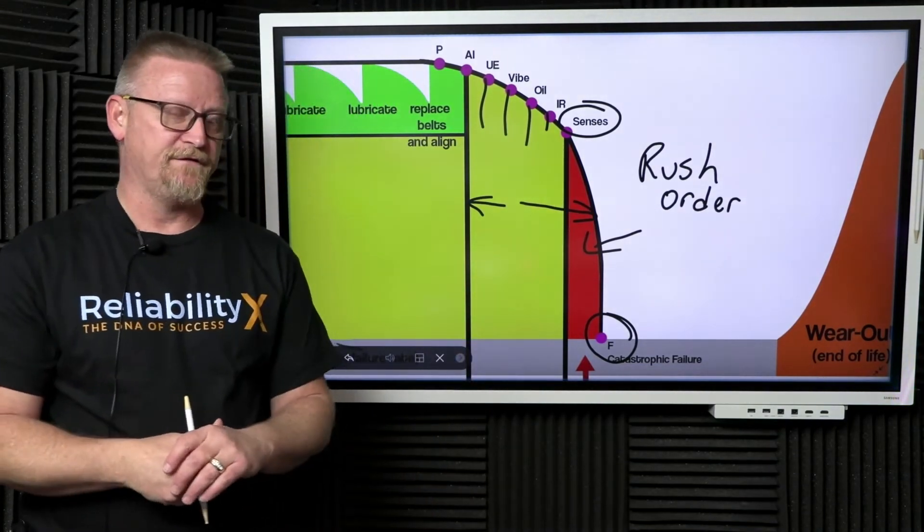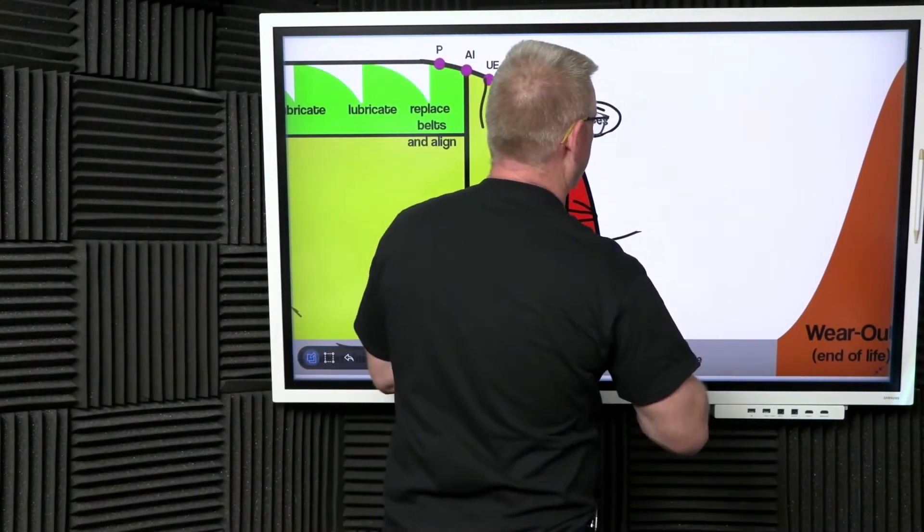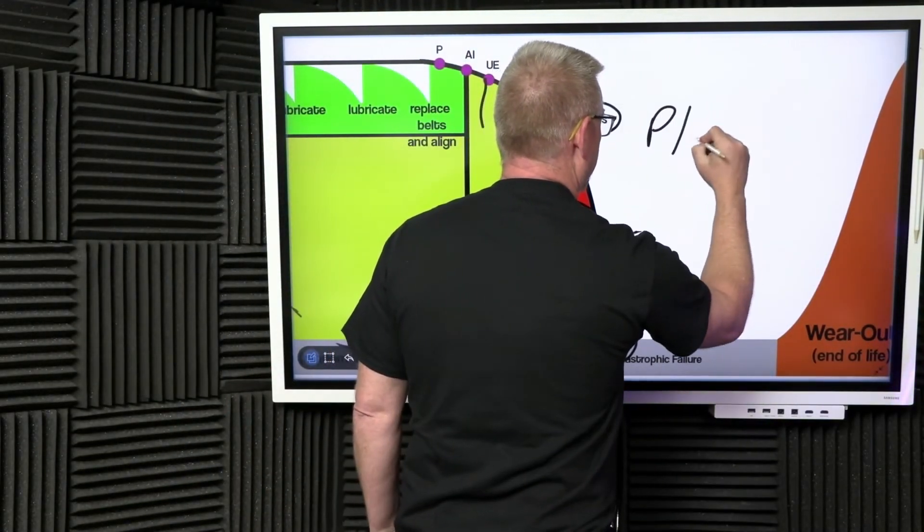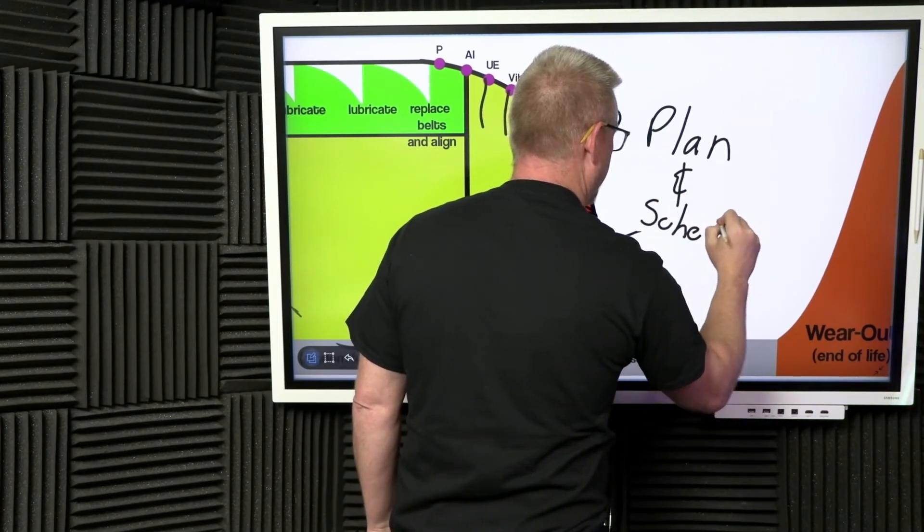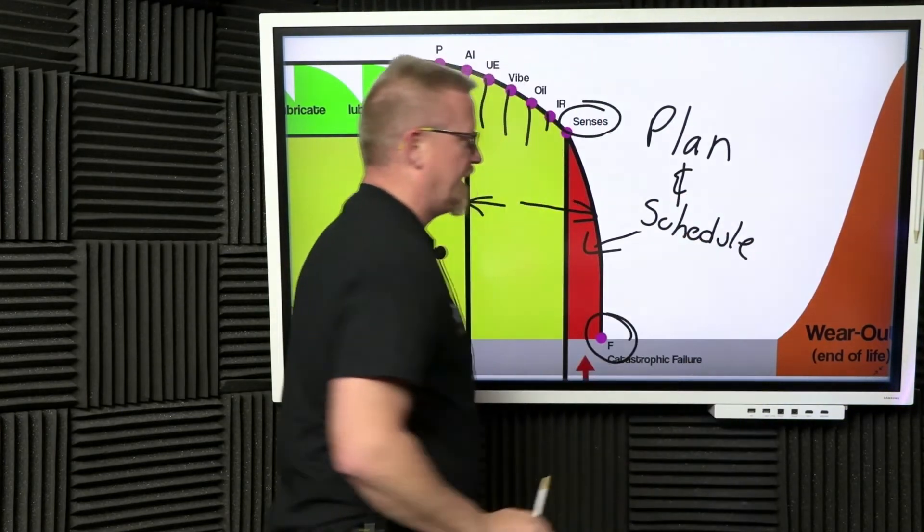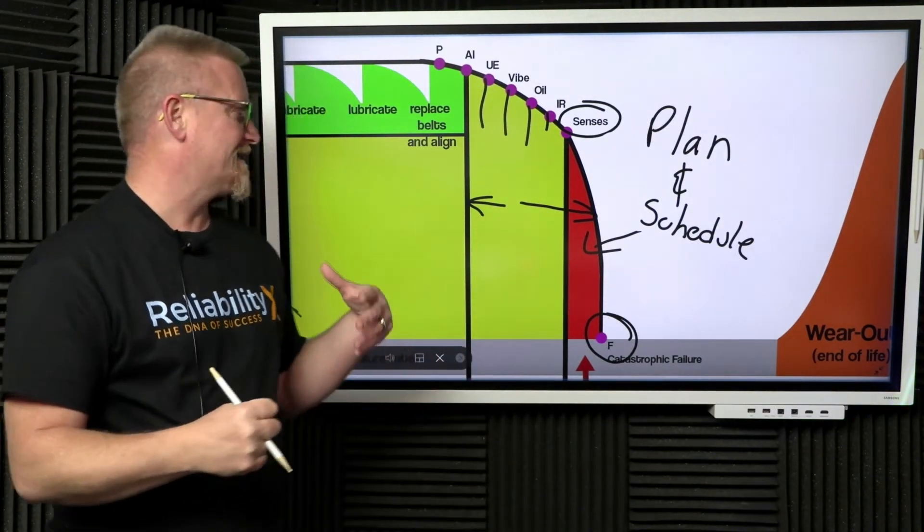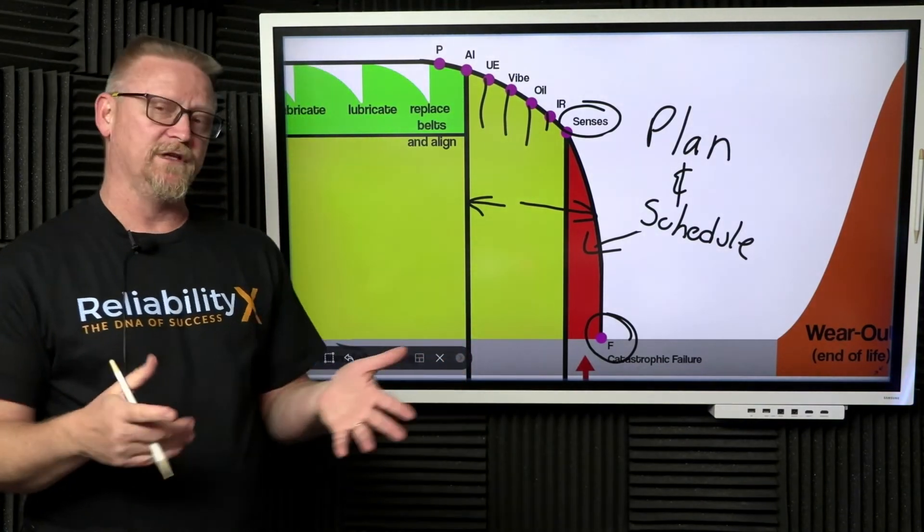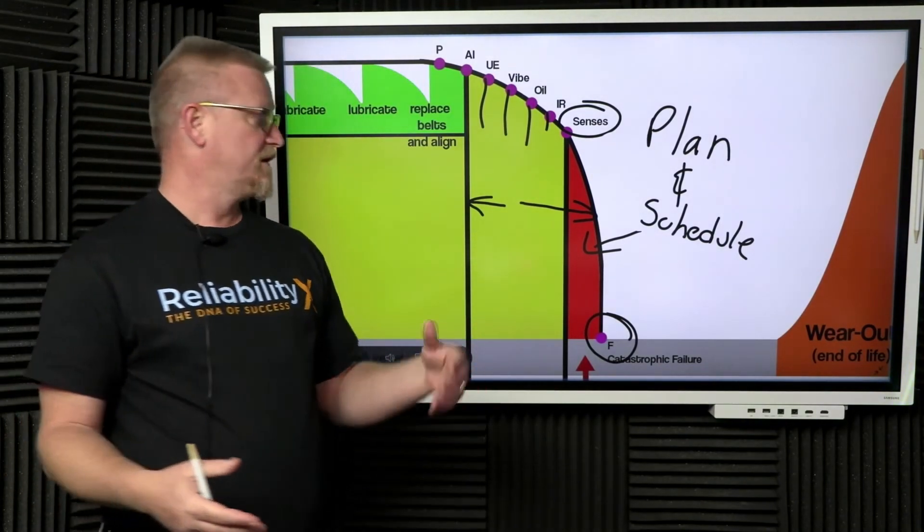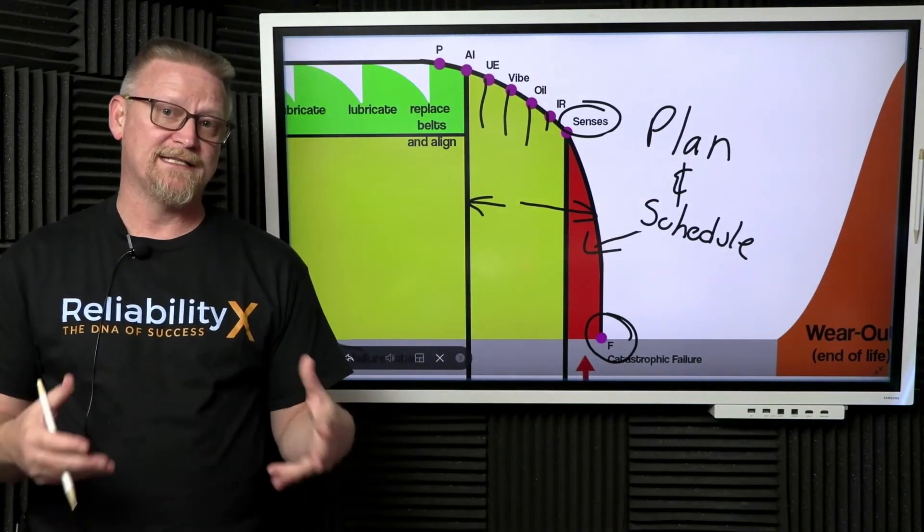If we are utilizing these predictive technologies, we get this much longer time window to the catastrophic event. This allows us to properly plan and schedule.